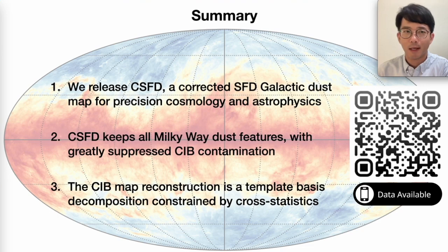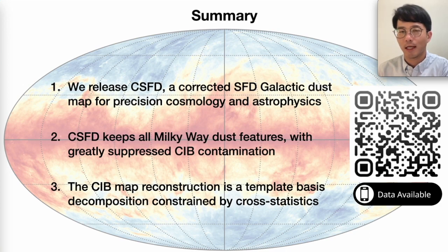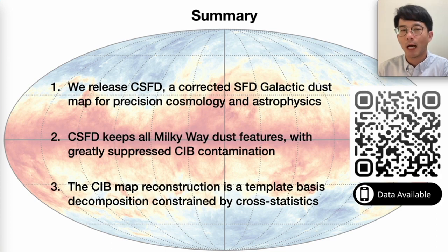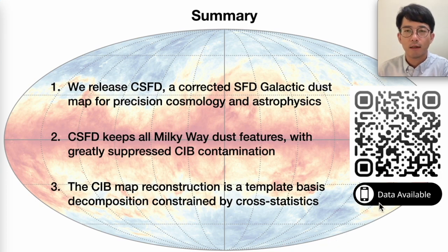In this work, I created and released a new galactic dust reddening map called CSFD, the Corrected SFD. This is done by tomographically correcting for the CIB contamination in SFD, and the new map should be more ready for cosmology analysis in the future. Along the process, there is also an interesting byproduct — the reconstructed CIB map — which might be of interest to others in the community. There is a data release website; please scan the QR code to take a look. Thank you very much for your attention.